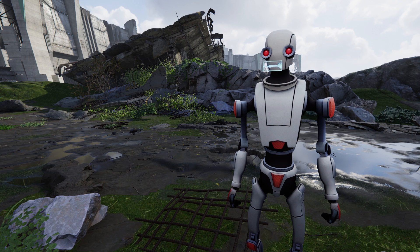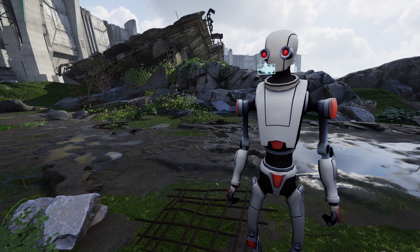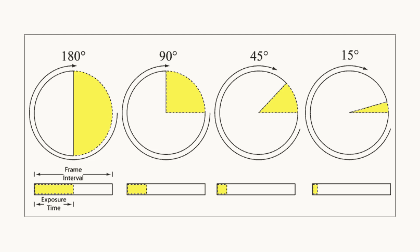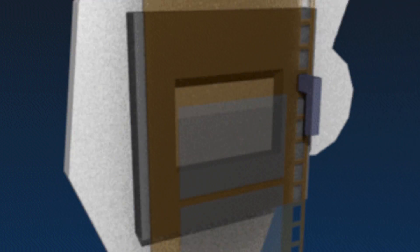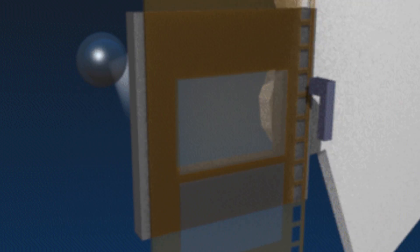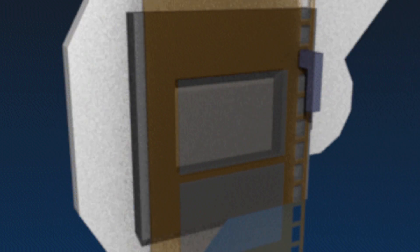That has nothing to do with the 180-degree rule, by the way, silly humans — where 360 degrees would be the entire 1/24th of a second. This is because old mechanical motion picture shutters were circular, with the cutout portion of the circle allowing light to pass through.